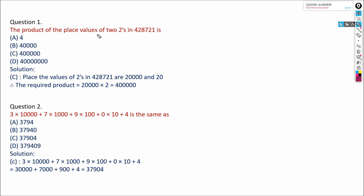The product of the place values of 2s in the given number. We will find how many 2s are there — here one 2 is there, and here another 2 is there. So we will write the place value of the first 2: write 2 and count the digits on the right-hand side of it.